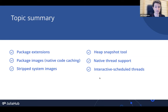So we're going to talk about package extensions and native code caching for packages, which speeds up load times, some ways to build smaller system images, a nifty heap snapshot tool, and some threading-related improvements — both for native thread interop and some scheduler improvements for interactive threads.